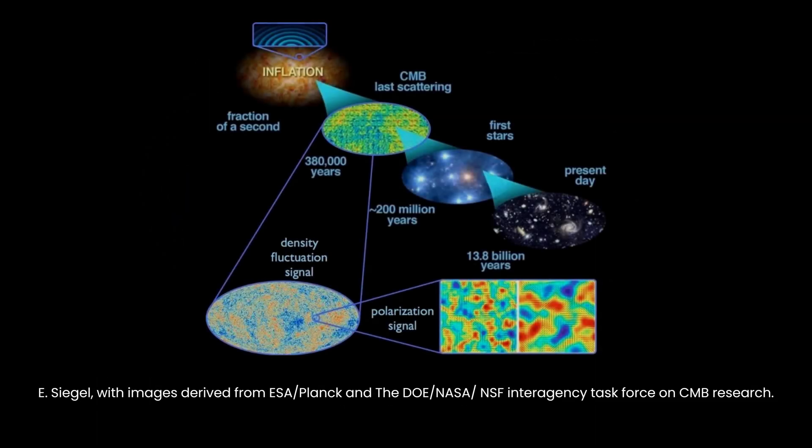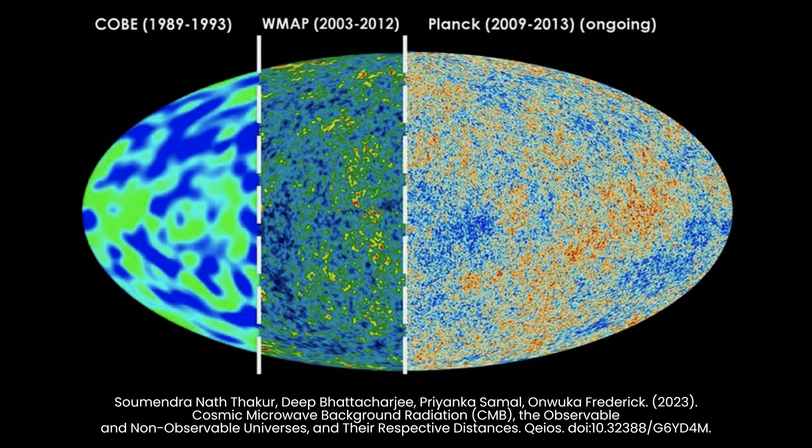...quantum fluctuations in the inflaton field are thought to have given rise to the large-scale structure of the cosmos. These primordial quantum fluctuations later evolved into the cosmic microwave background radiation and the distribution of galaxies we observe today.